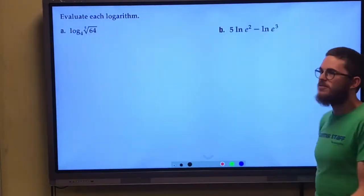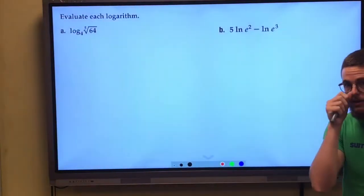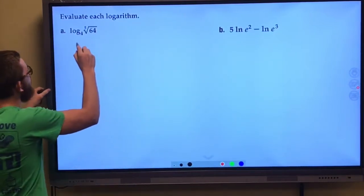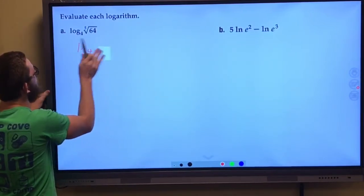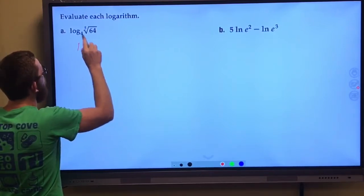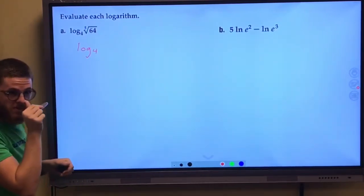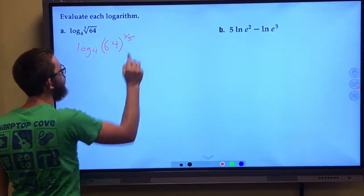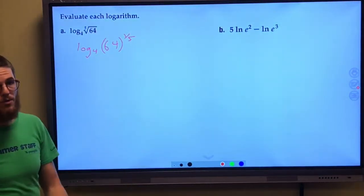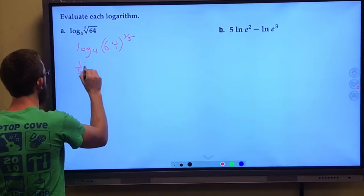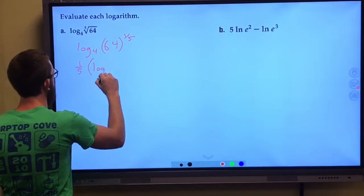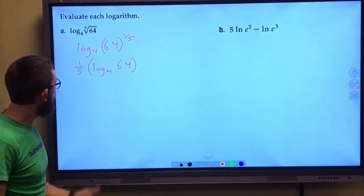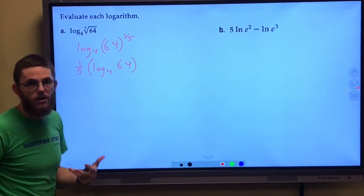We can also use the properties to help evaluate. And we're going to do this with no calculator at all, just understanding our properties. So first I'm going to rewrite. This is log base 4 of the fifth root of 64. Fifth root of 64 is the same thing as 64 raised to the 1 fifth power. So I'm going to go ahead and move that 1 fifth out to the front. I'll deal with you later, 1 fifth. So this is 1 fifth log base 4 of 64. And so think about this. What is log base 4 of 64?